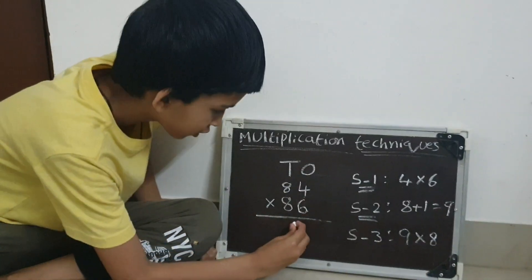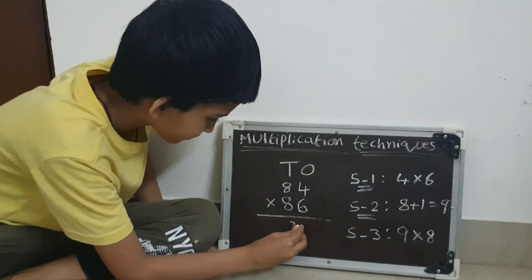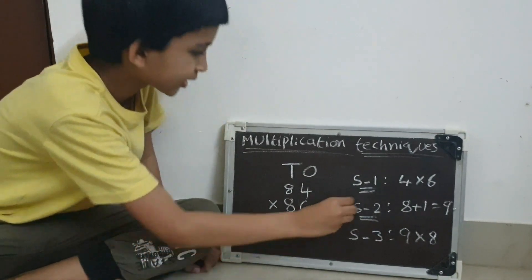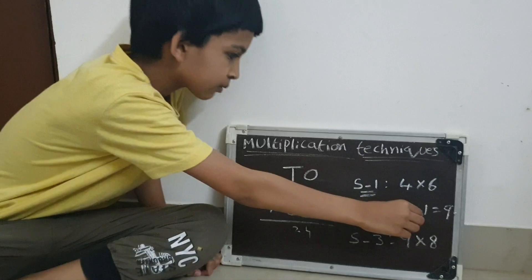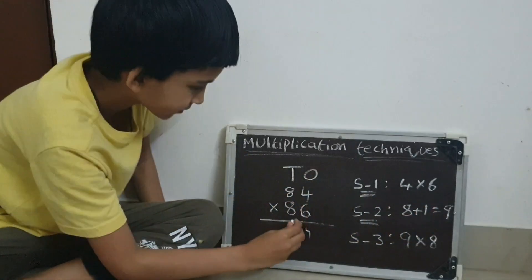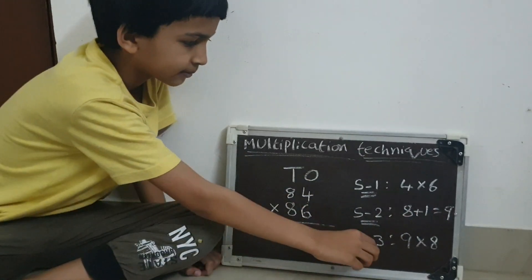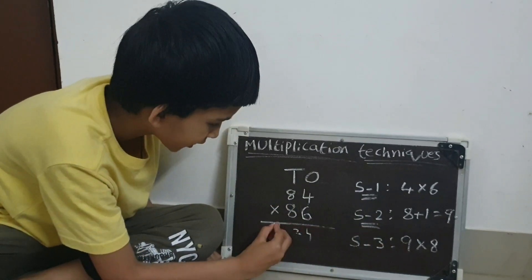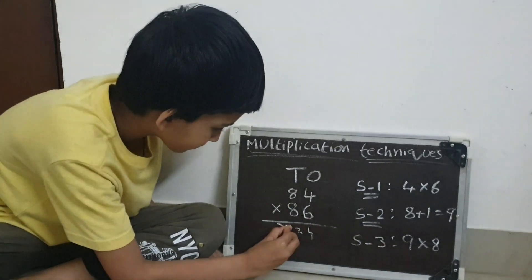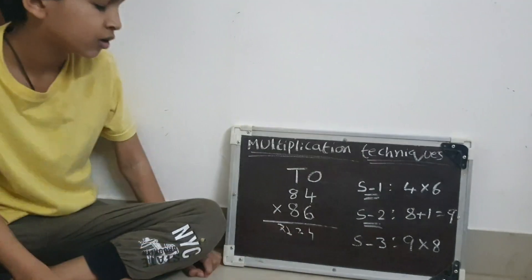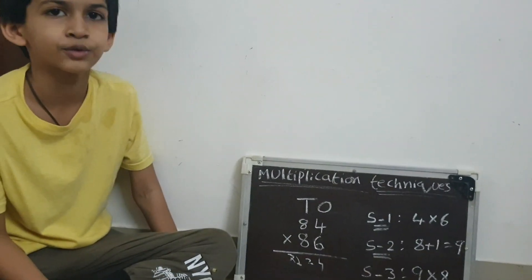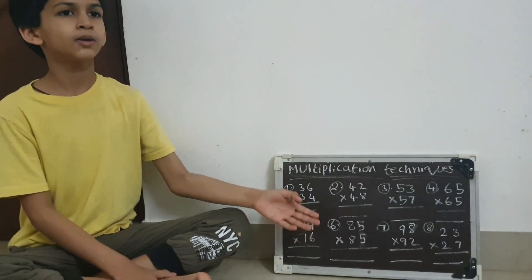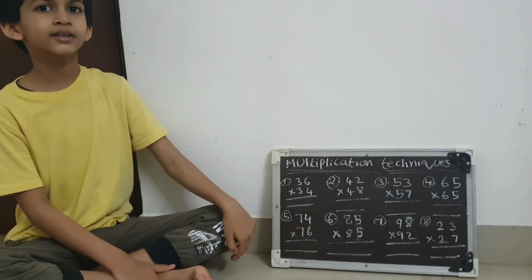Step 2: add 8 plus 1 equal to 9. Now step 3: multiply 9 by 8, equal to 72. So your answer is 7424. You can solve this problem easily with my techniques in seconds.